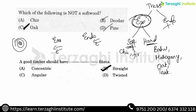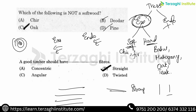A good timber should have straight fibers. The fibers should be straight and narrow for maximum strength. The strongest arrangement is when the grains are perpendicular. Perpendicular grains are the strongest; non-perpendicular grains are the weakest. Narrow, straight grain arrangement gives the strongest timber.